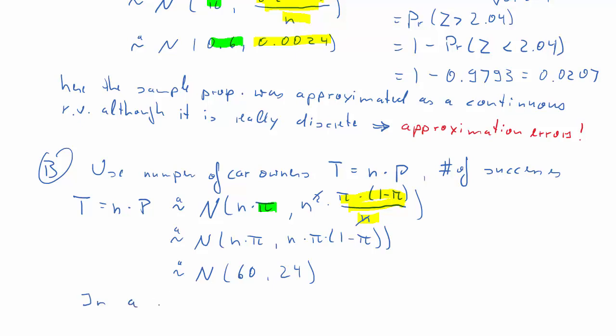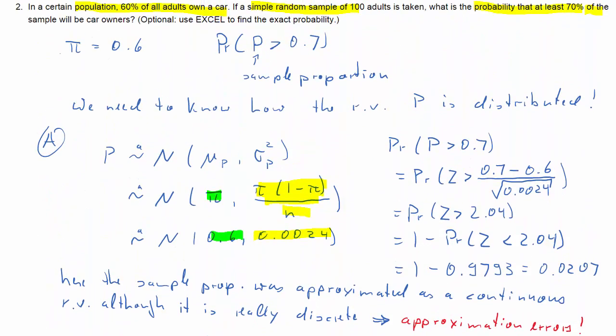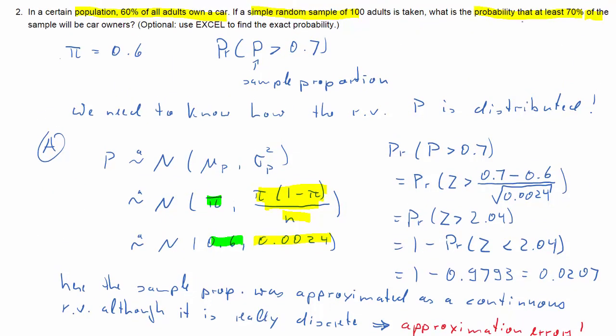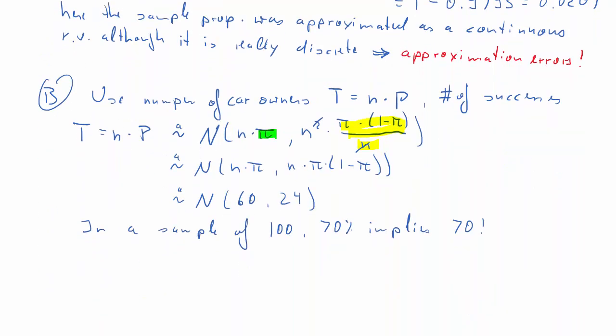So we are interested in whether our sample will produce a proportion of at least 70%. Now, 70% of 100 implies 70, right? So, we are looking for the probability that T is at least 70.